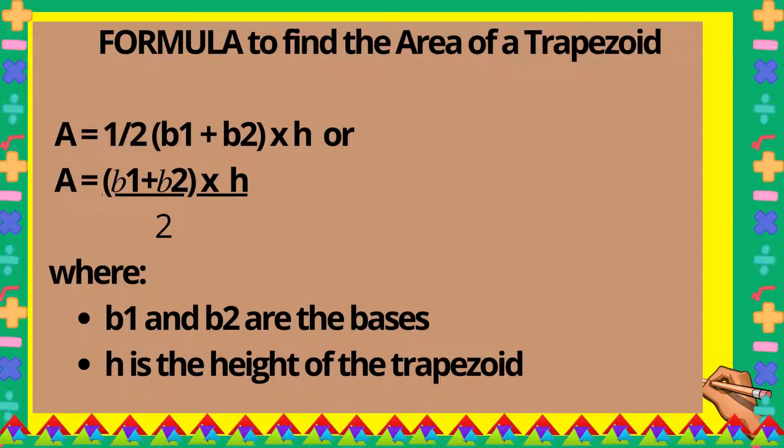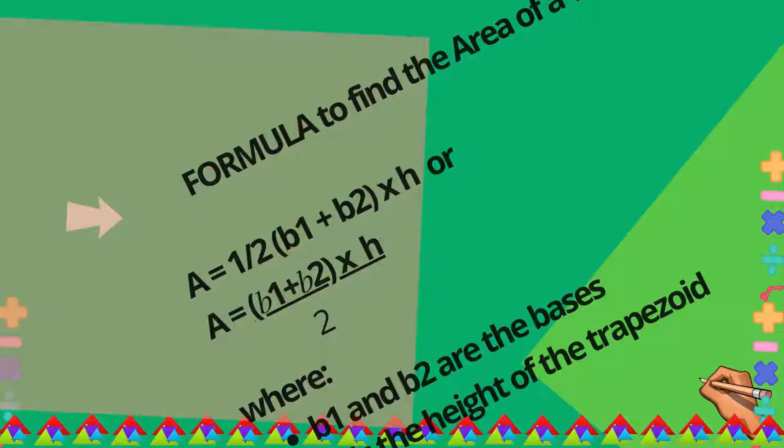Or area is equal to base 1 plus base 2 multiplied by height divided by 2, where base 1 and base 2 are called b1 and b2, and h is for the height of the trapezoid.